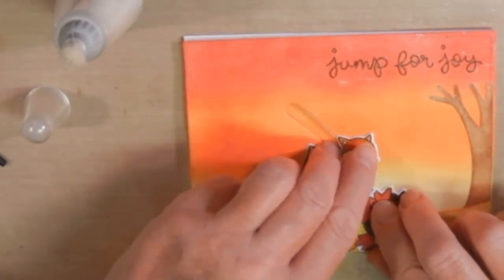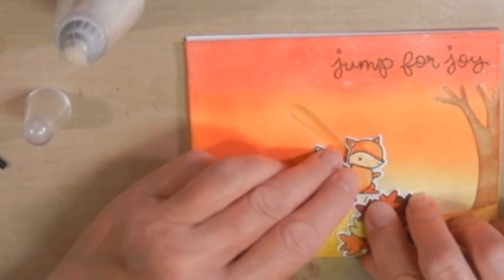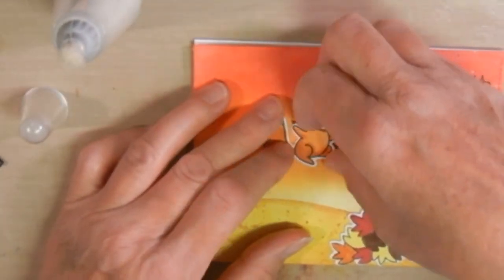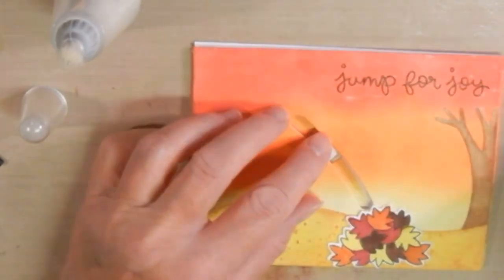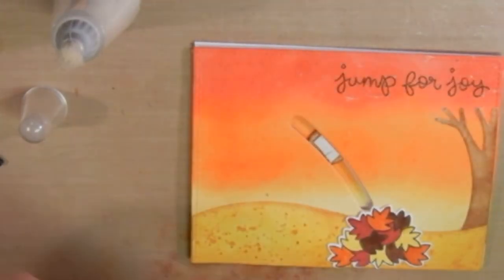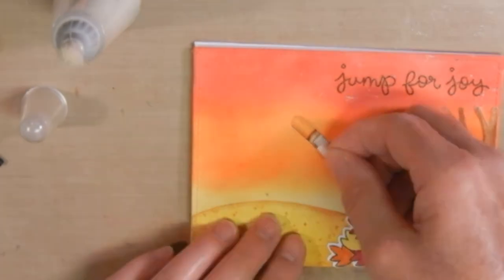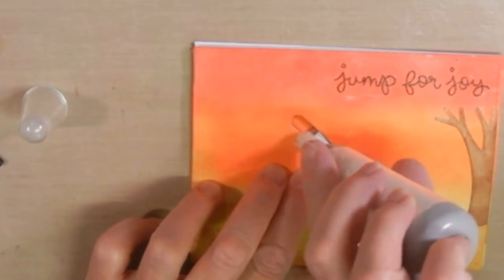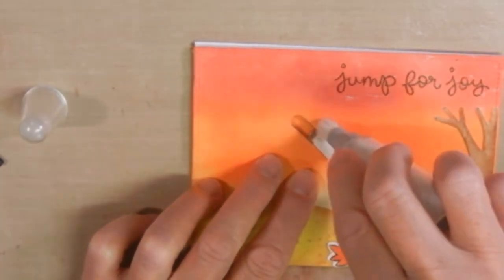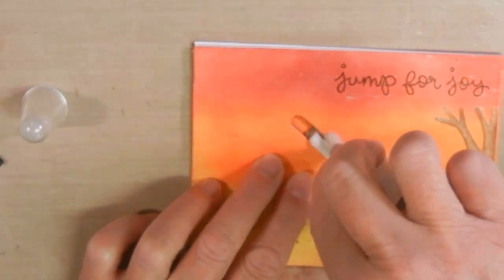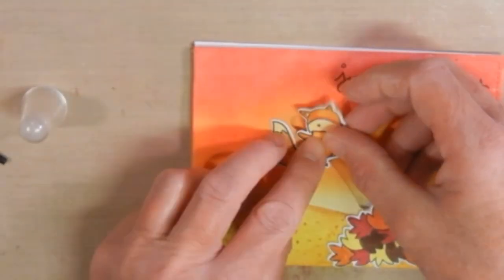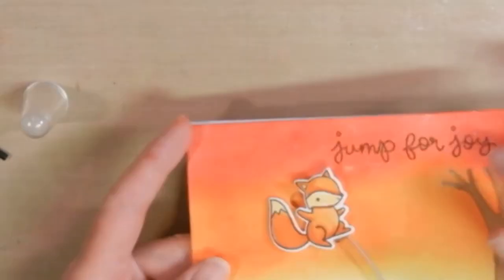Then I used the glue to attach all my other pieces that I had stamped with the Jump for Joy stamp set. And I colored them with Copic markers. I didn't put the coloring in here because with the hop I didn't want the video to be too long. I also decided that I needed a little bit more foam tape on top of the coin so that the fox would be above the leaves. And then it would slide a little better.